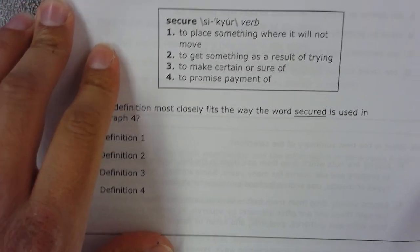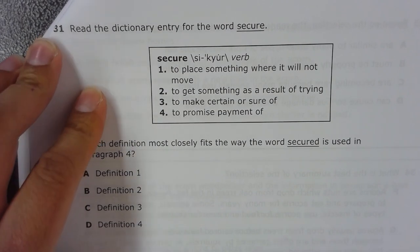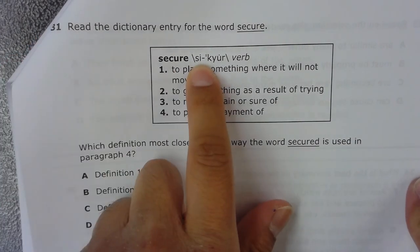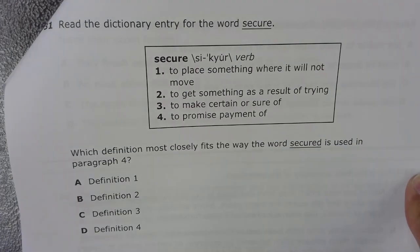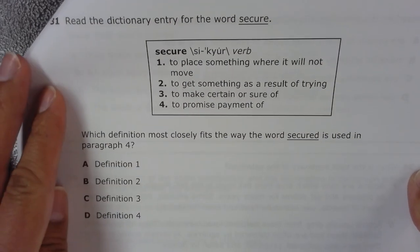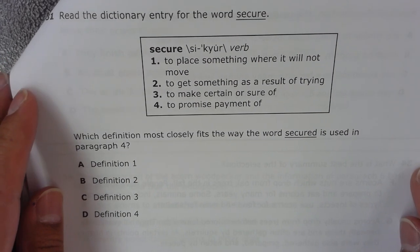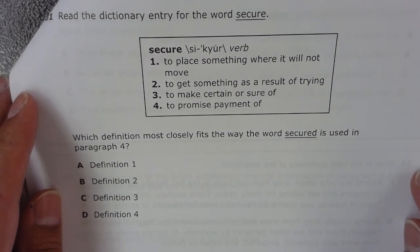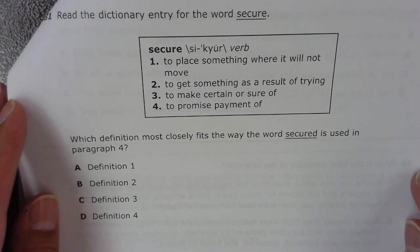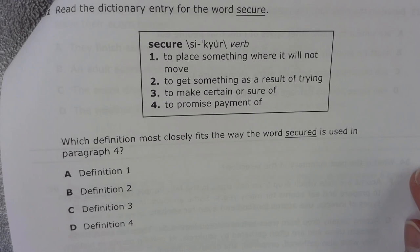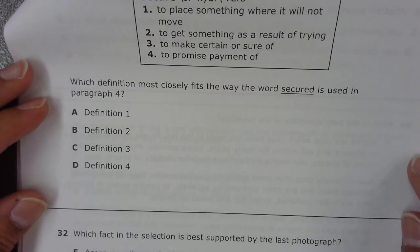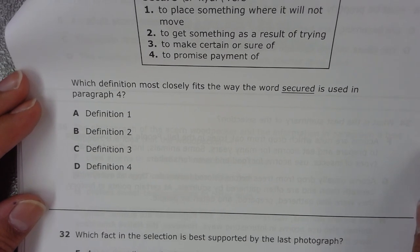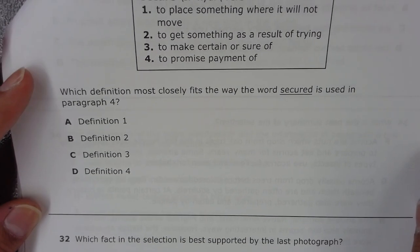Number 31. Read the dictionary entry for the word secure. Secure. Verb. 1. To place something where it will not move. 2. To get something as a result of trying. 3. To make certain or sure of. 4. To promise payment of. Which definition most closely fits the way the word secure is used in paragraph 4? A. Definition 1. B. Definition 2. C. Definition 3. D. Definition 4.